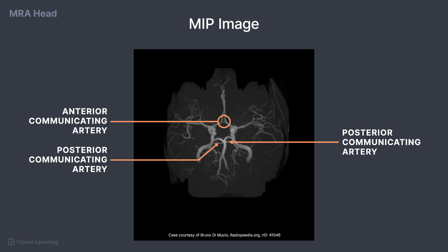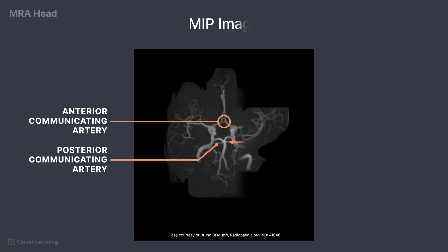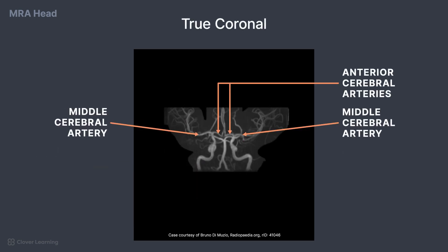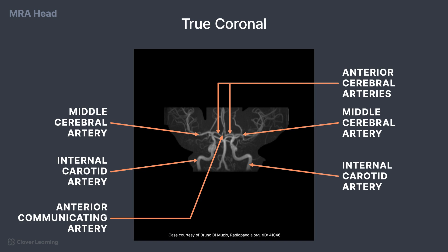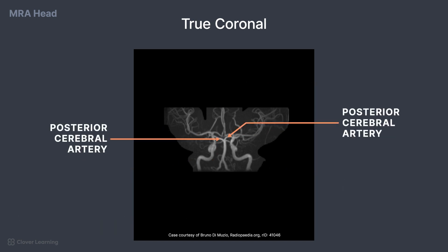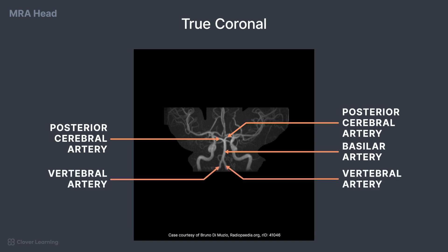Now that we have seen the images in an oblique orientation, let's look at the structures in a true coronal, sagittal, and axial orientation. Here we can see the anterior cerebral arteries, middle cerebral arteries, and internal carotid arteries. For the posterior circulation, the posterior cerebral arteries, basilar artery, and vertebral arteries are visible.